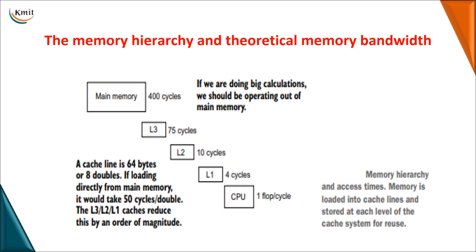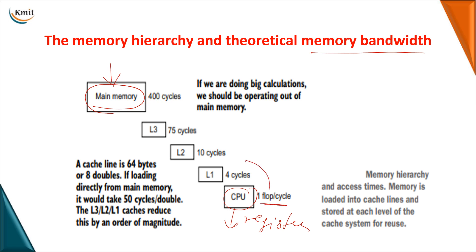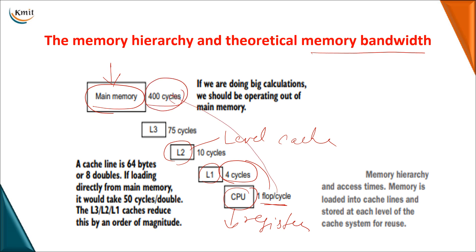Next, we calculate theoretical bandwidth. Before that, consider the memory hierarchy: data can be stored in main memory or in registers closer to the CPU. Accessing data from a register requires only one cycle; Level 1 cache requires four clock cycles; Level 2 cache requires 10 cycles. As you move farther from the CPU, the time required to access data increases. So it is better to have data present in the CPU rather than in main memory. This relates to memory hierarchy.